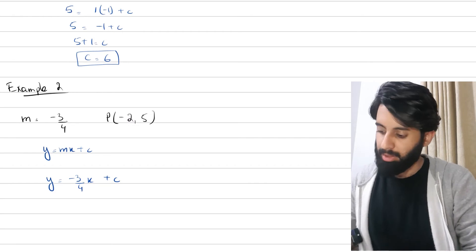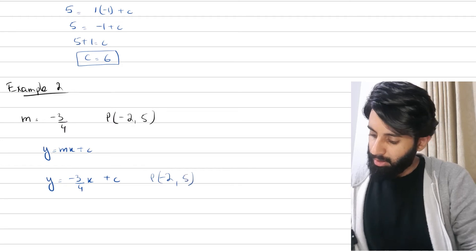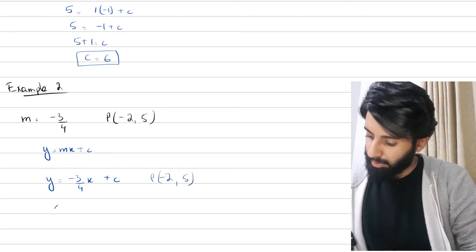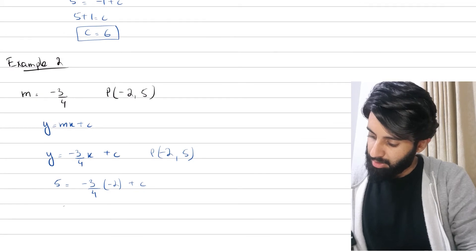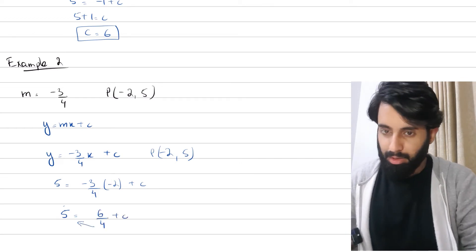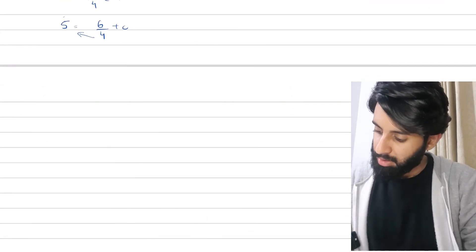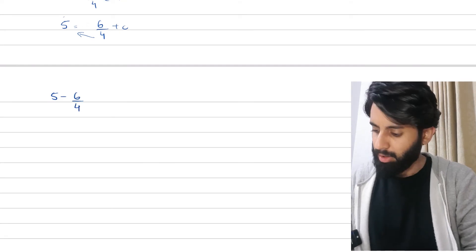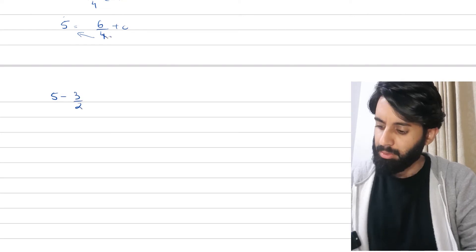Now to find the value of c, we're going to do exactly what we did earlier — plug in the point (−2, 5). In place of y we plug in 5 and in place of x we plug in −2. So we get: 5 = (−3/4)(−2) + c, which simplifies to 5 = 6/4 + c.